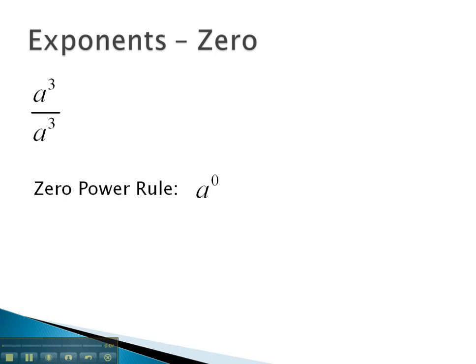To begin investigating 0, we will consider the expression a cubed over a cubed. a cubed in the numerator means we are multiplying 3 a's, same in the denominator: a times a times a.